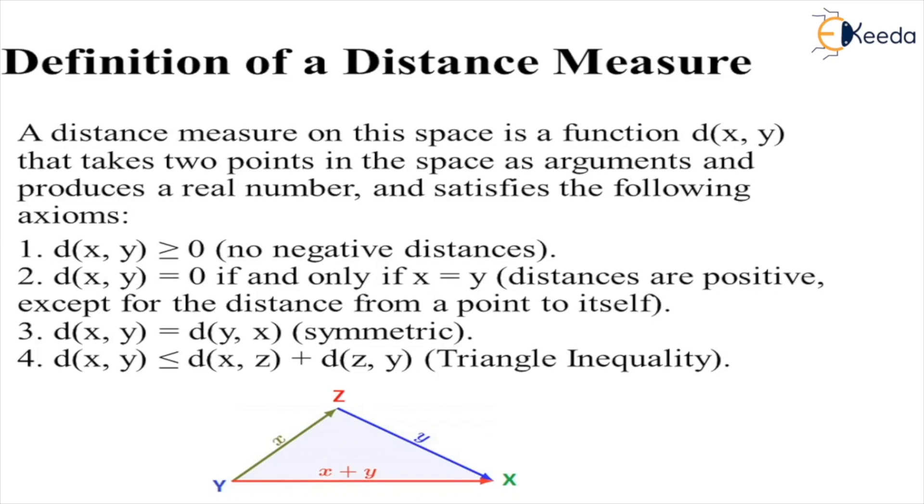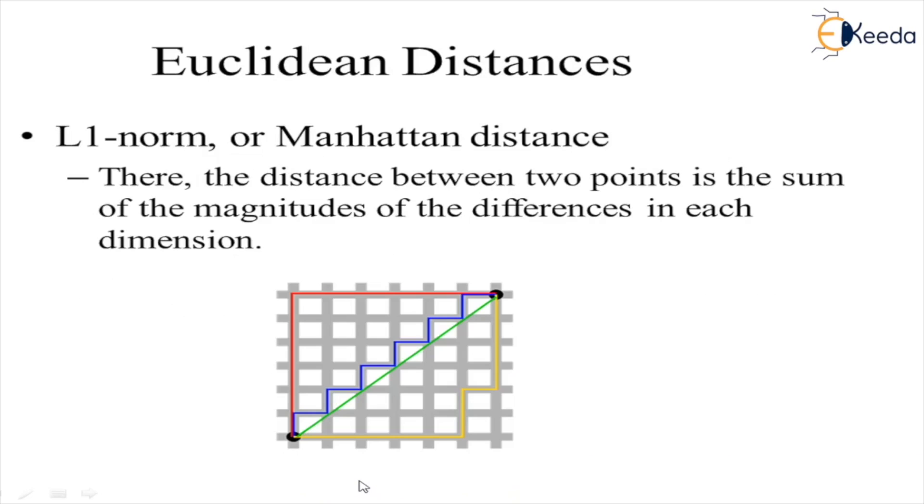...distance d(x,y) ≤ d(x,z) + d(z,y), and we call it the triangle inequality. You can observe the diagram. Let's understand: the distance between x and y, if we go through z, the sum of those two distances cannot be less than the direct distance. Euclidean distances...